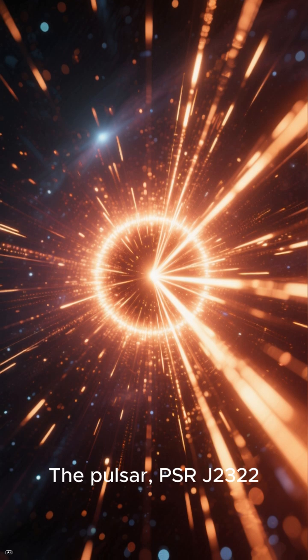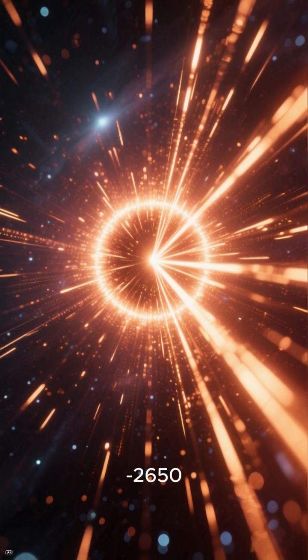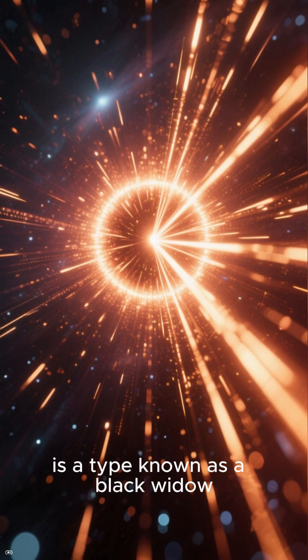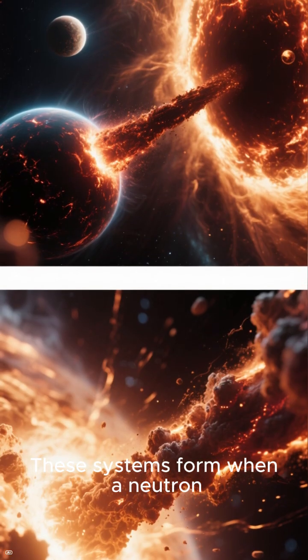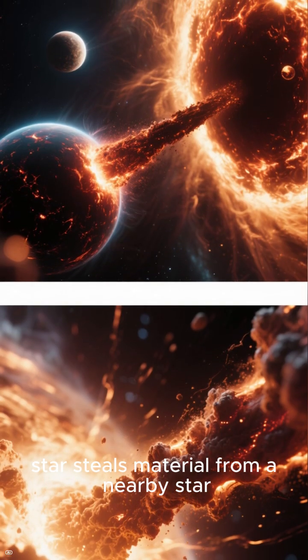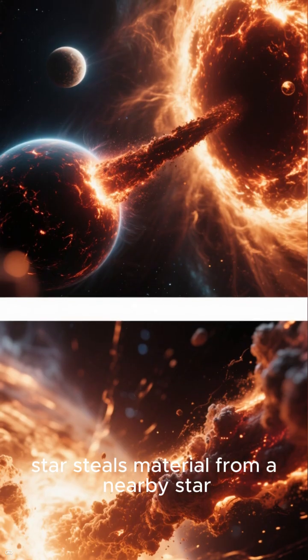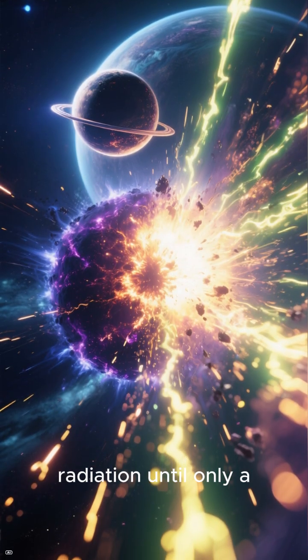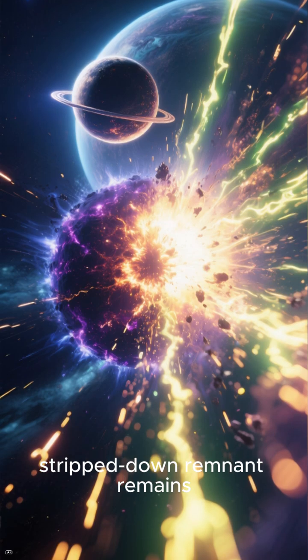The pulsar, PSR J-32222650, is a type known as a black widow. These systems form when a neutron star steals material from a nearby star, blasting it with radiation until only a stripped-down remnant remains.